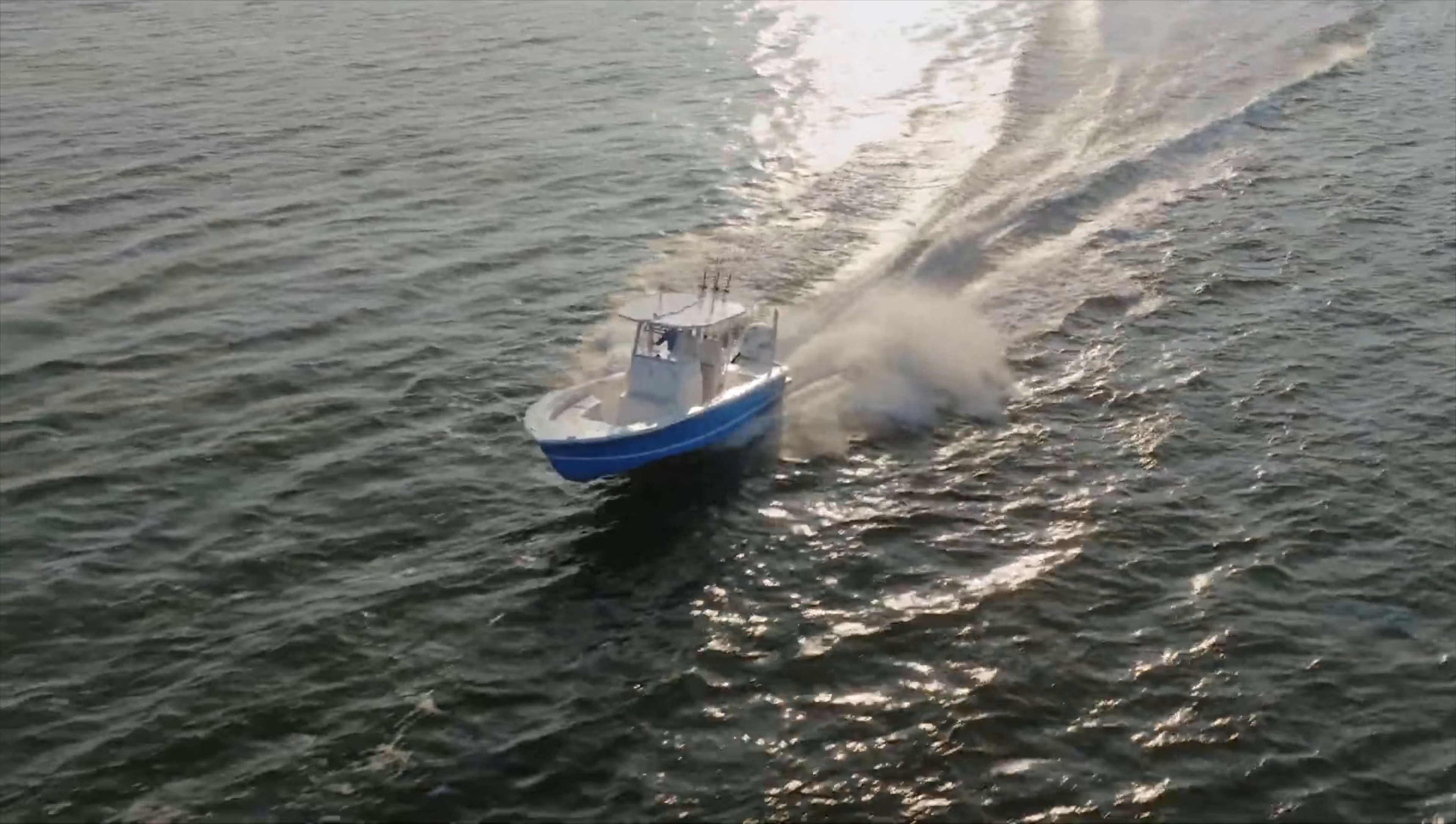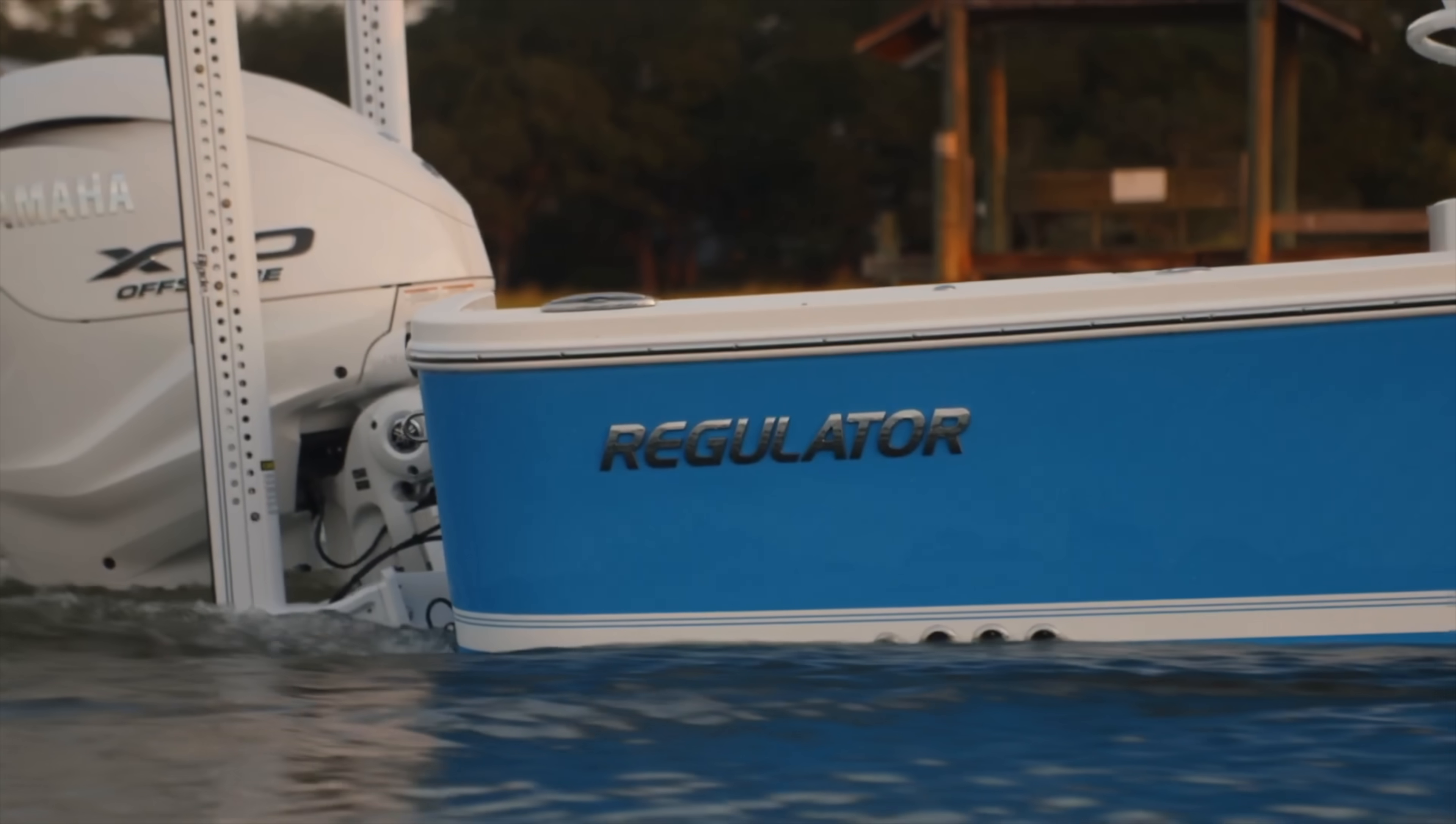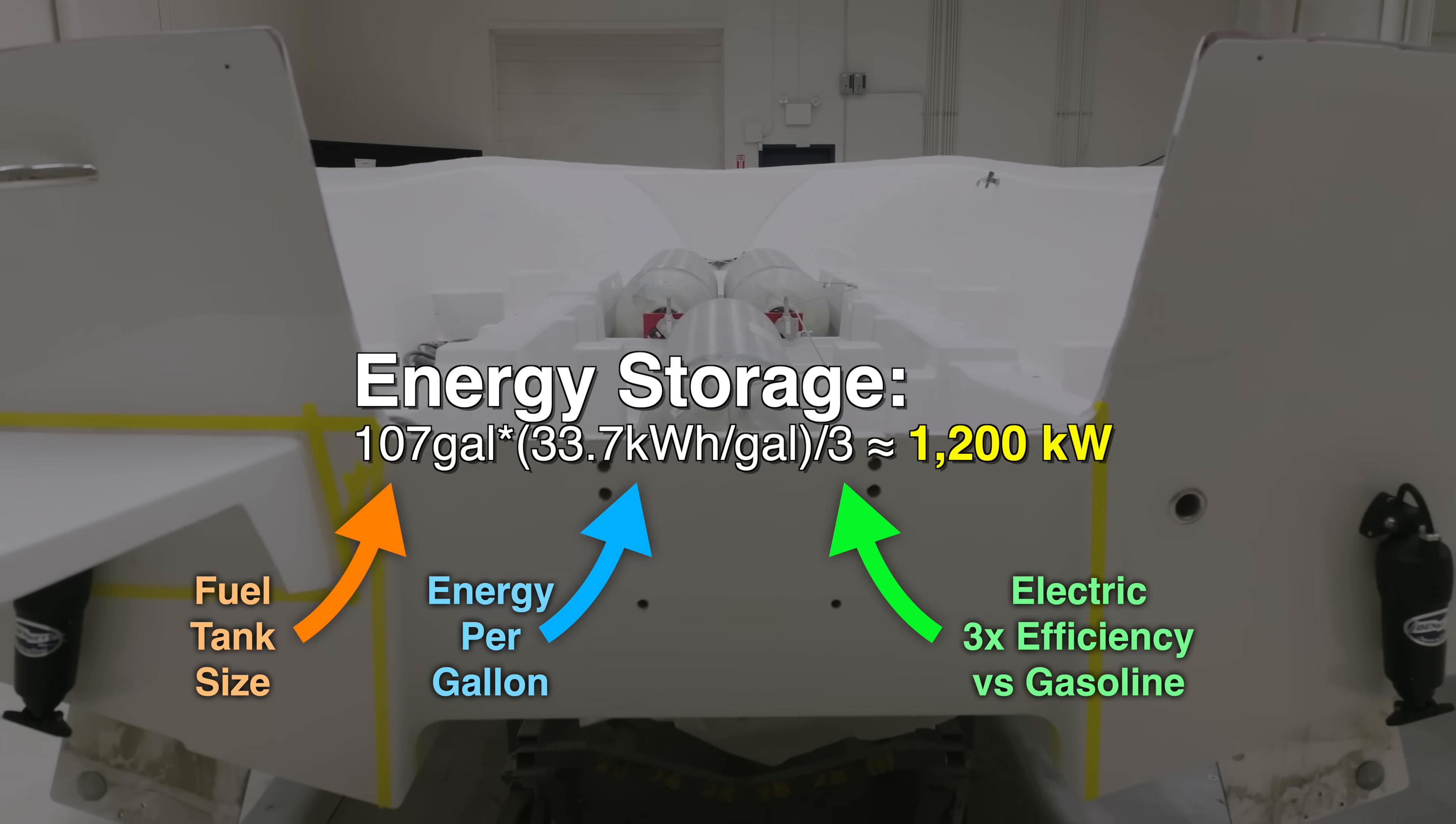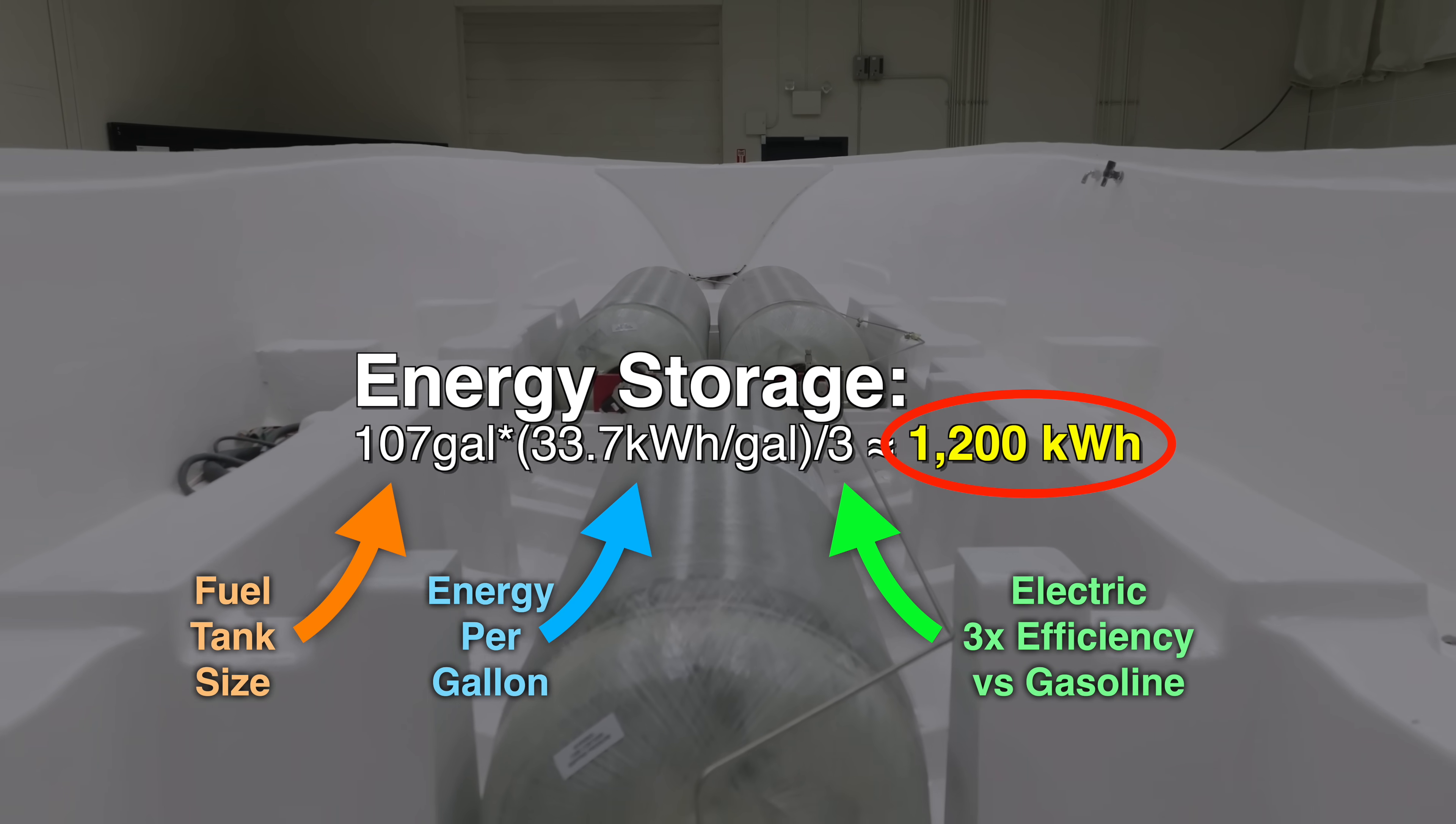So just as an example, this prototype build is based on a 26-foot offshore fishing boat, which normally comes with a 107-gallon gasoline fuel tank. If you were to try and go electric, even if you assume the electric powertrain was three times as efficient, that'd mean you'd need a 1,200-kilowatt-hour battery pack to match the range.